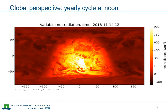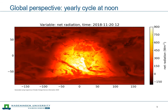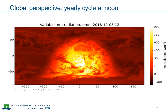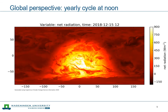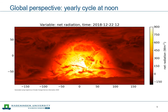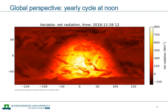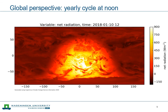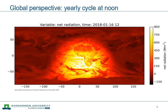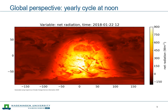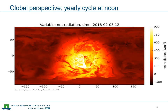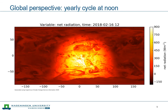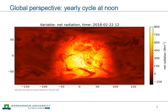These two movies show us that there are two cycles very much dominating when you look at radiation: the diurnal cycle and the yearly cycle. And on top of that, there are all kinds of short-term variations related to cloudiness.